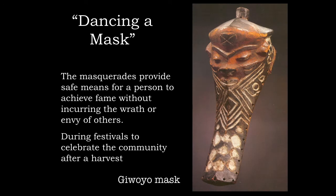The first mask I want to talk about is the giwoyo mask, which represents the idea of the ancestor. The masquerades in the giwoyo provide an opportunity for the youth who perform to demonstrate skill, prowess, charm, and wanga — the ability to bring together all the qualities showing that a person has extraordinary attributes. These are done during festivals to celebrate the community, associated with the harvest. The giwoyo mask is usually performed at sunset as part of a procession of ancestors returning to the village.